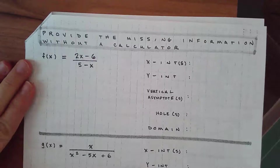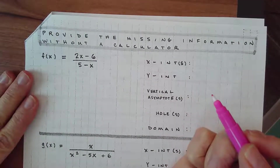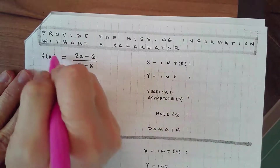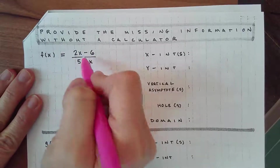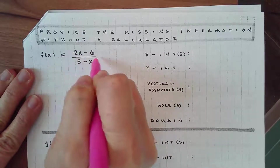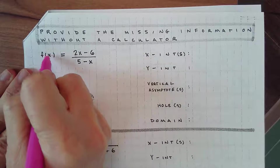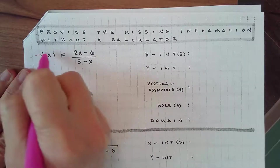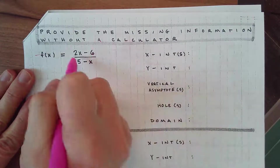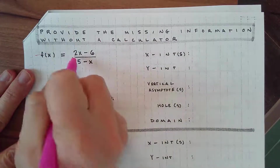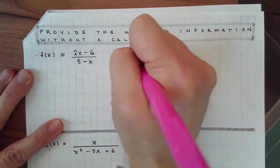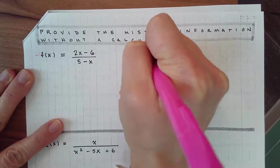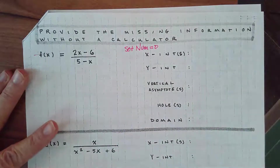Looking at this first example: x-intercepts. An x-intercept for a rational function is when y is zero. When you plug zero in for y and multiply both sides by the denominator, because this is zero, it turns into zero — zero times anything is zero. So your x-intercepts, if you remember this from Algebra 2, is all you're really going to do is set your numerator equal to zero and solve. That's how you find your x-intercepts.